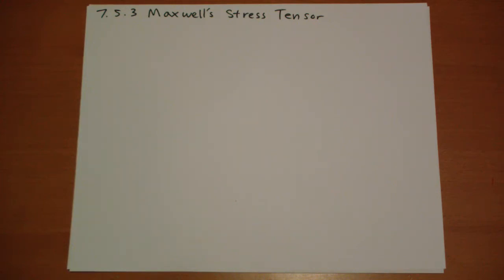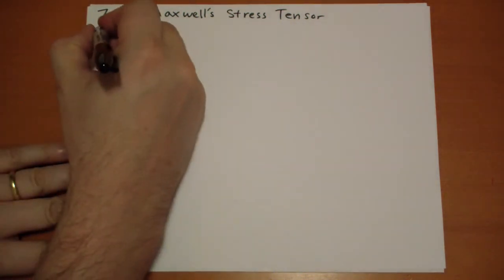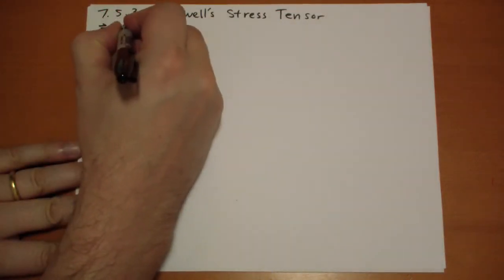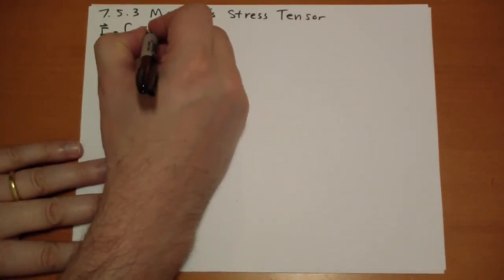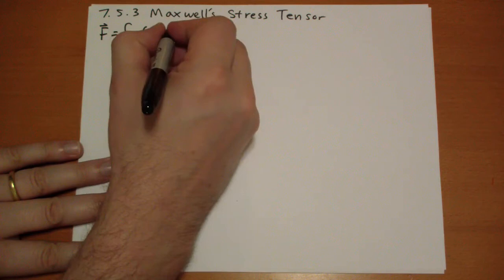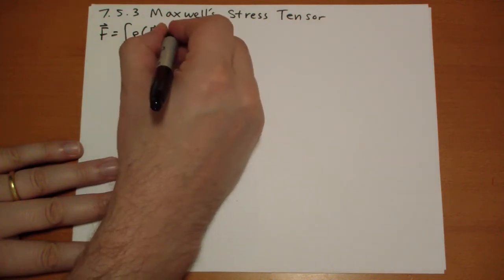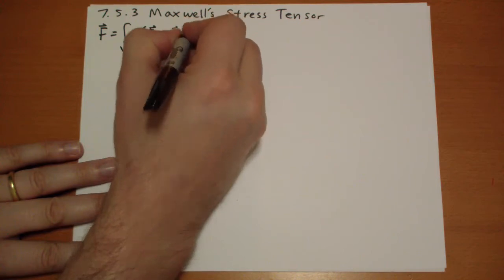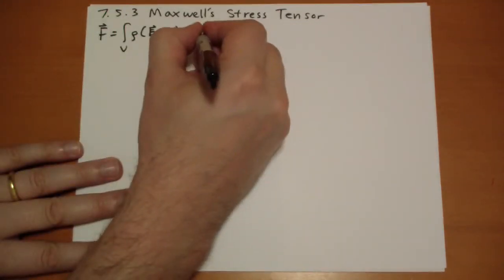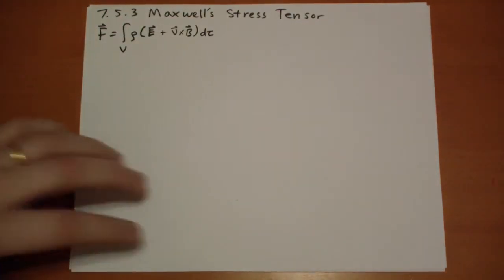Let's calculate the total force on charges in a volume V. So that's going to be given by an integral over the volume of the charge density times the electric field at each point inside that volume plus the velocity of those charges at that point cross the B field at that point times the volume size.